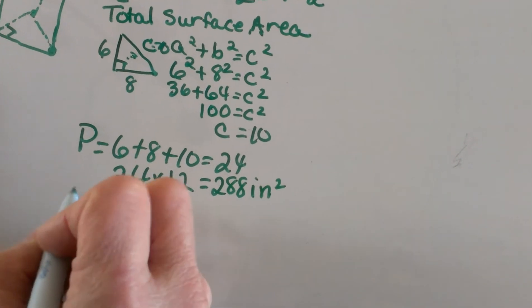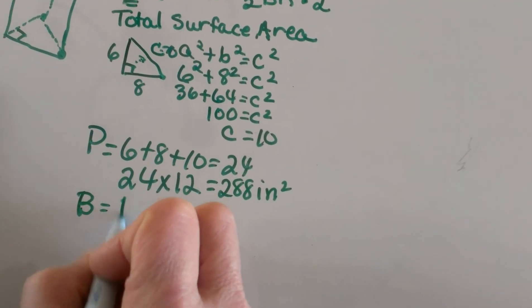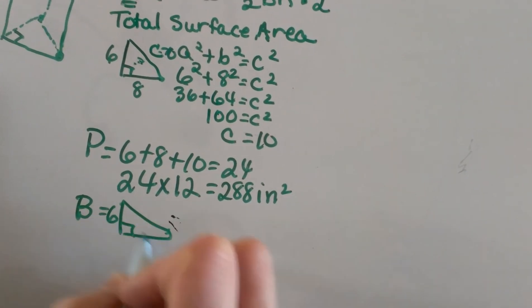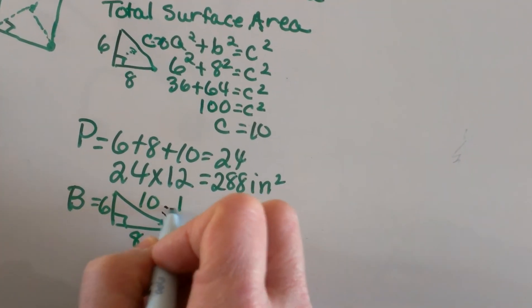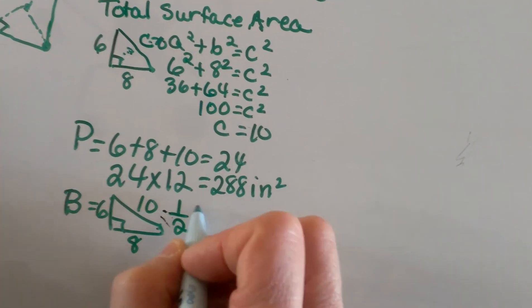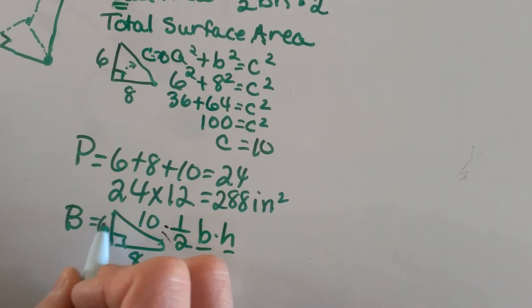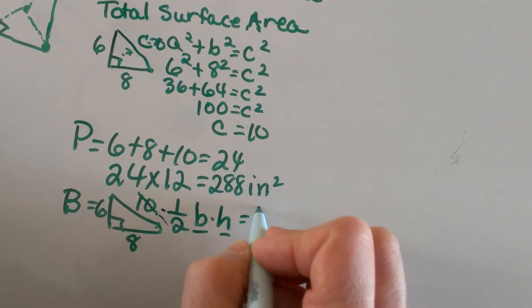Now I need to find my base areas. My base is the triangle, so let's draw the base again. I've got 6 on one side, 8 on one side, and 10 on the hypotenuse. My formula for the area of a triangle is ½ base × height. My base and height in a right triangle are just the two legs, so I'm not going to use the hypotenuse in this formula.